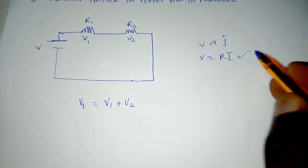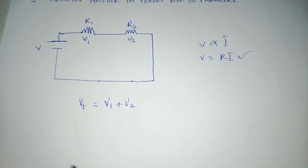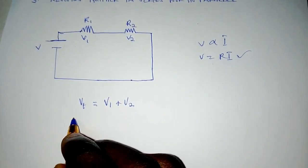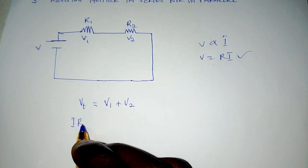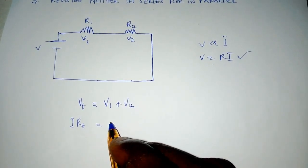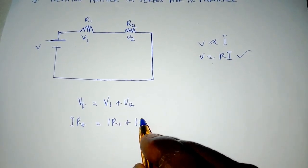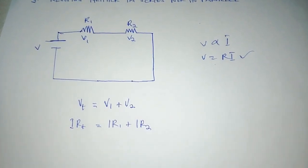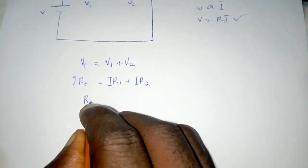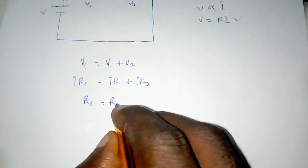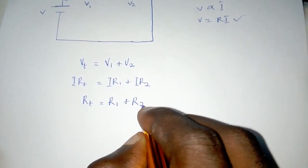So in place of that you can have I Rt being equal to I R1 plus I R2. Now, this becomes Rt being equal to R1 plus R2.